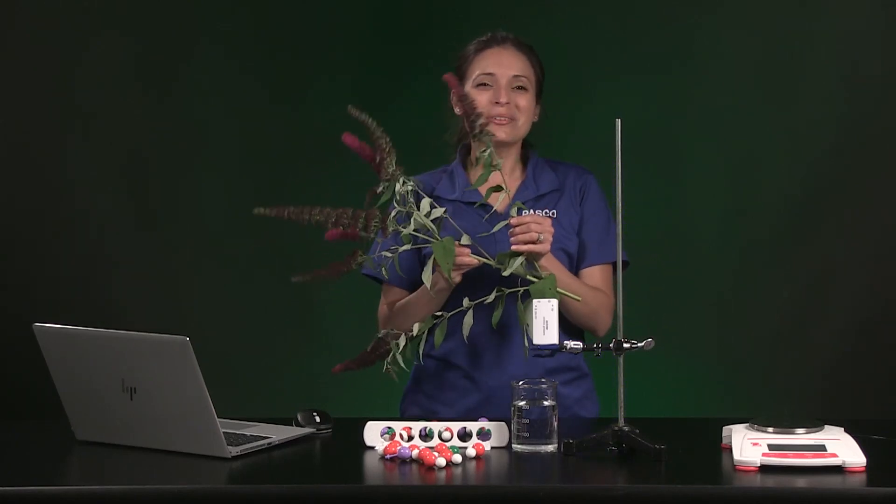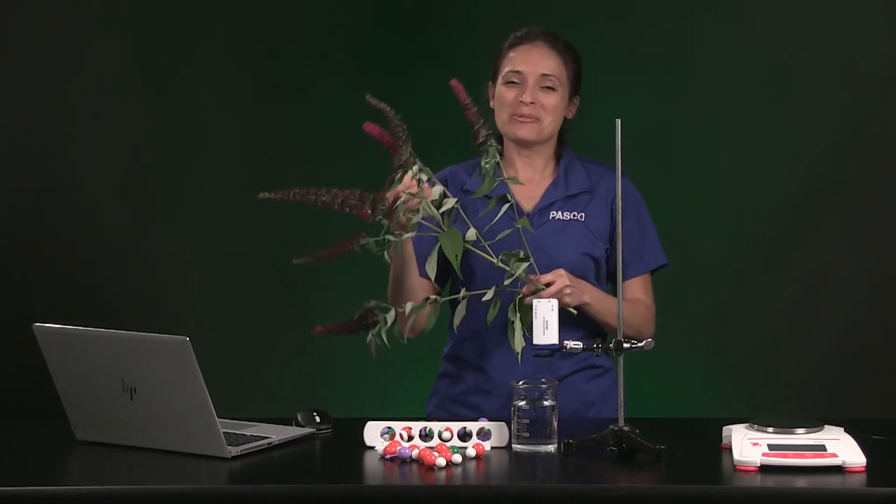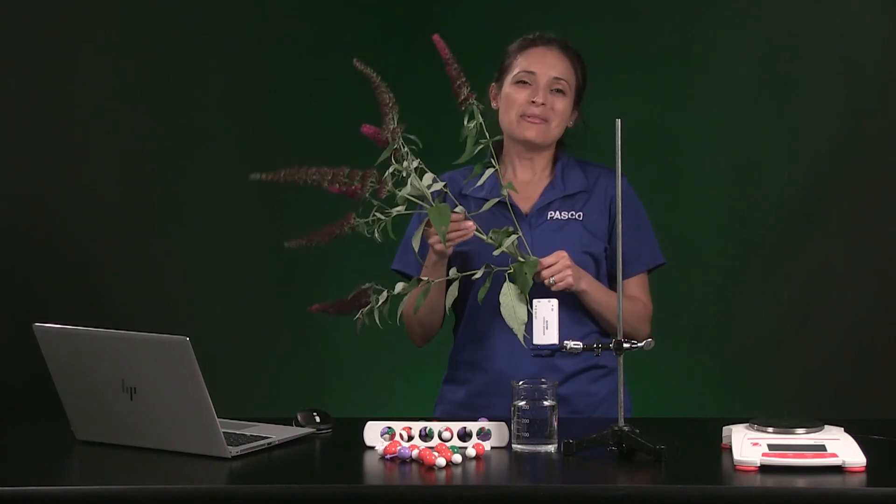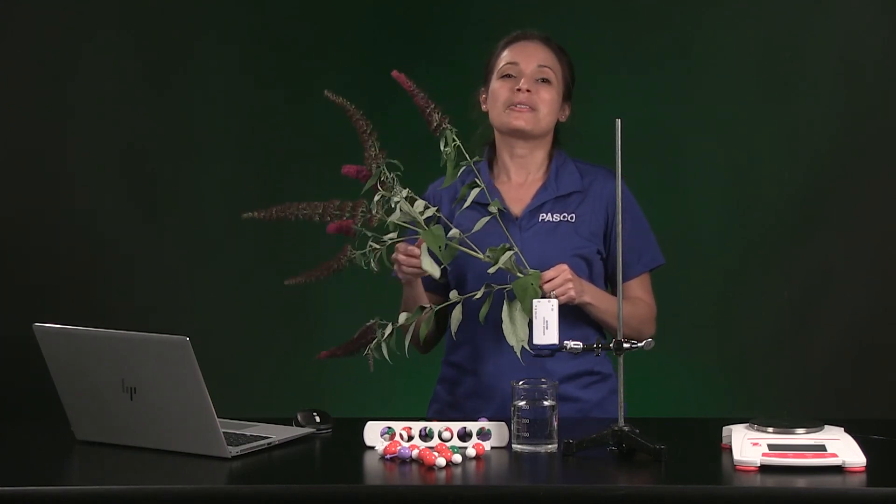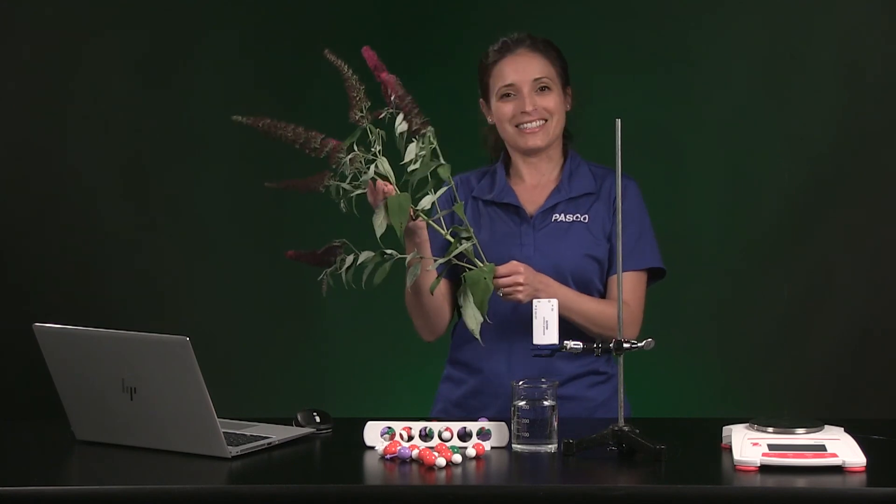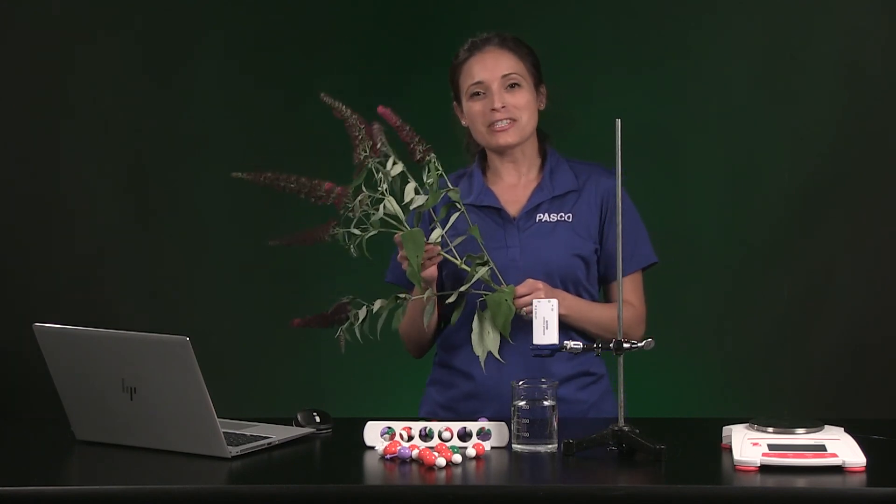Look at this poor branch. It's so thirsty. If this branch was still attached to its plant, how would the plant know how much water to take into its roots by osmosis when it's wilted like this? What factors affect the rate of osmosis?